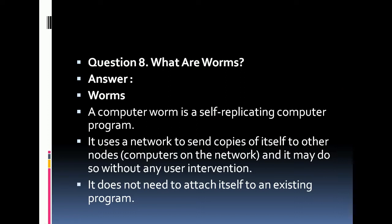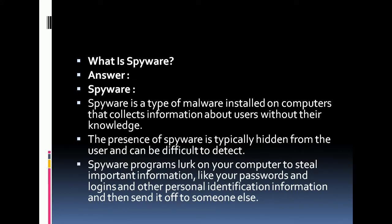A worm is a self-replicating computer program. It uses a network to send copies of itself to other nodes or computers on the network, and it may do so without any user intervention. It does not need to attach itself to an existing program.